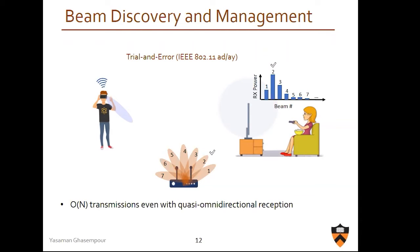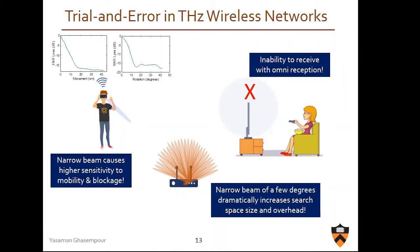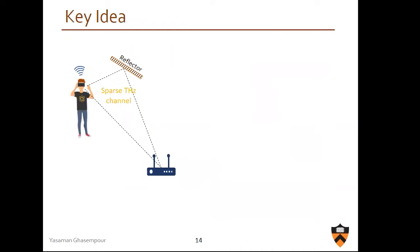If the link is mobile, you have to keep repeating the same procedure. The problem is you need on the order of N transmissions, even if one side is omnidirectional and the other is directional. The number of transmissions can be reduced to order log N, but it's still a huge number. If we apply the same idea at terahertz, we cannot do omnidirectional reception because you actually need directionality on both sides. The number N goes up, and you are much more sensitive to mobility, orientation, and translation. These are real data collected in the lab at 200 GHz — you can see that a small rotation or movement of a few centimeters causes significant dB loss in the signal.